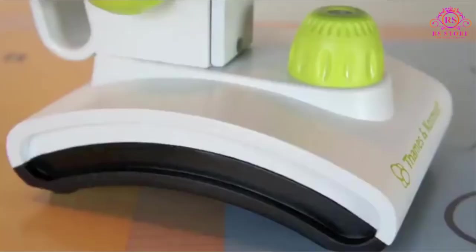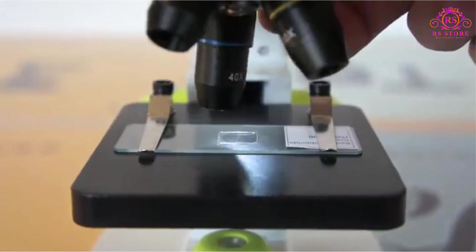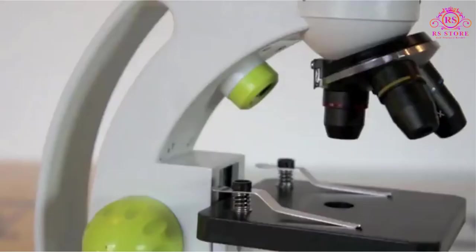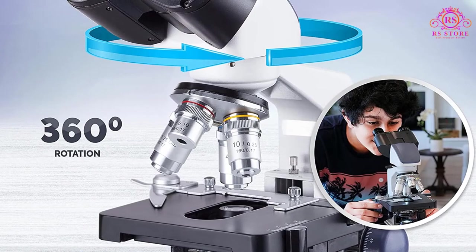The Amscope features a binocular head that can be adjusted between 53 to 77 mm for convenience and easy use for each person. This feature also considers people's different eye strengths and makes it a suitable purchase for almost anyone.